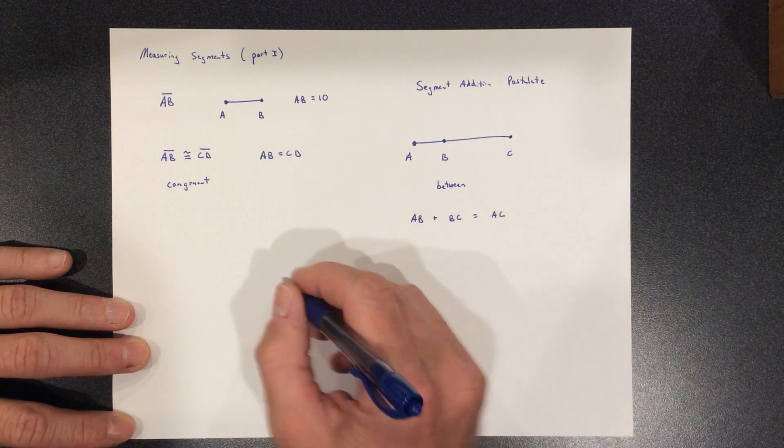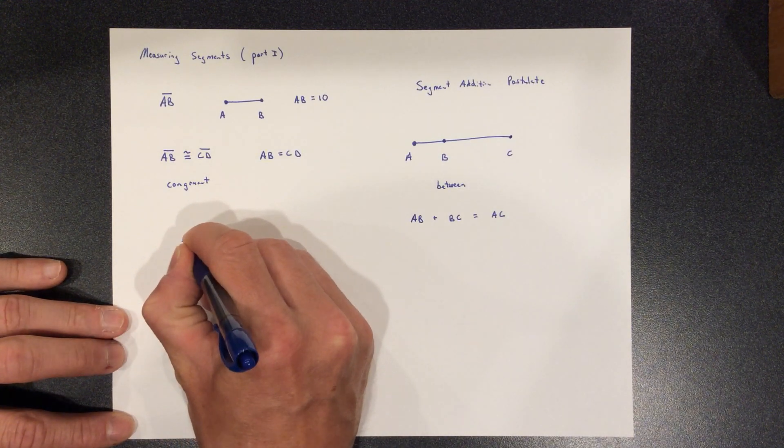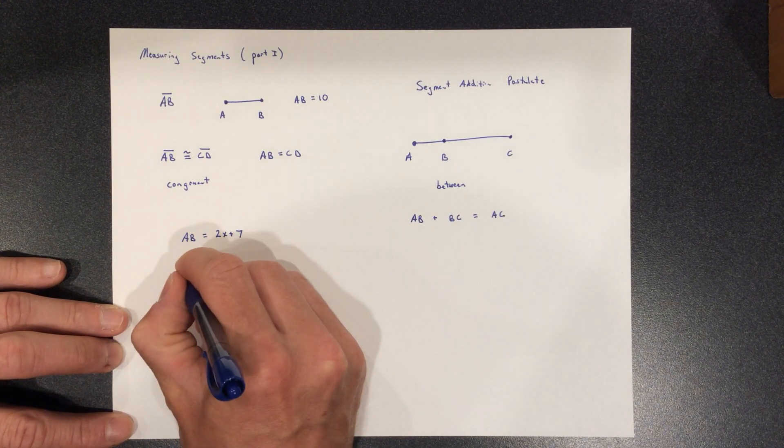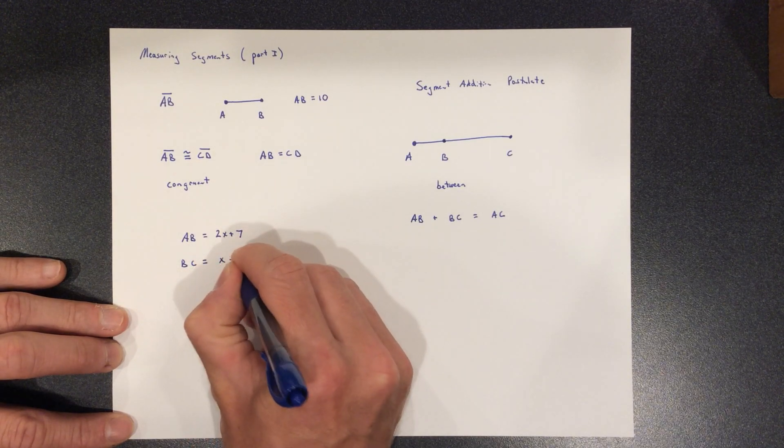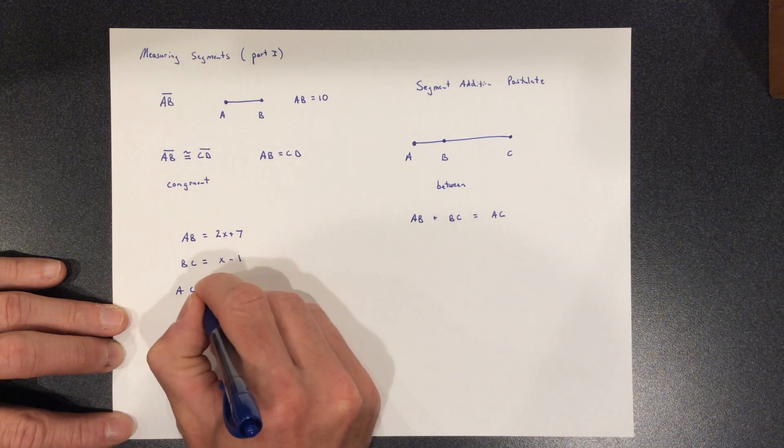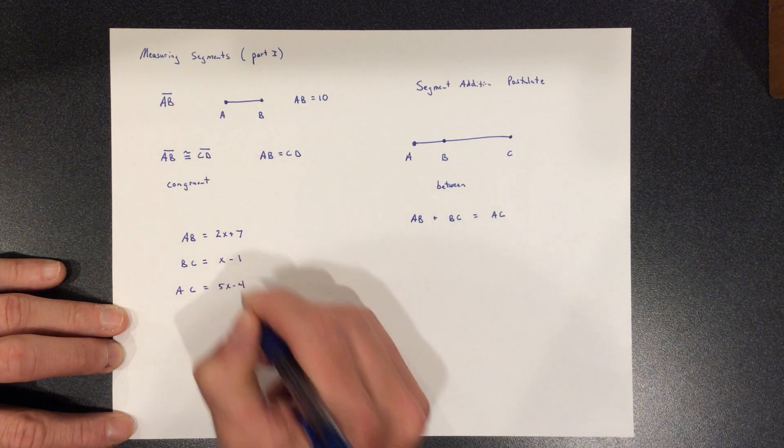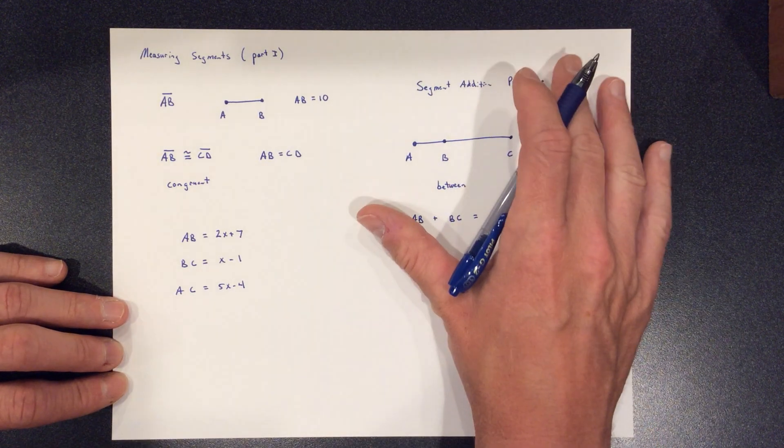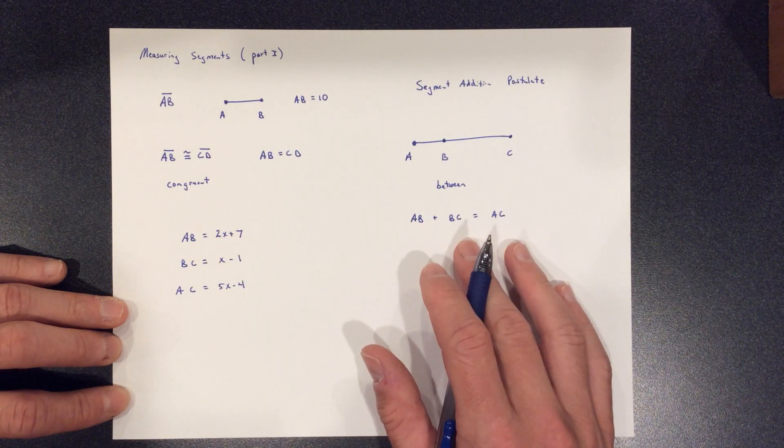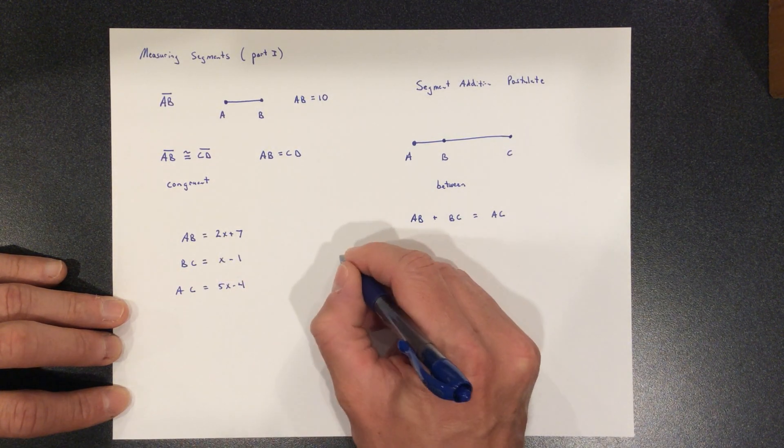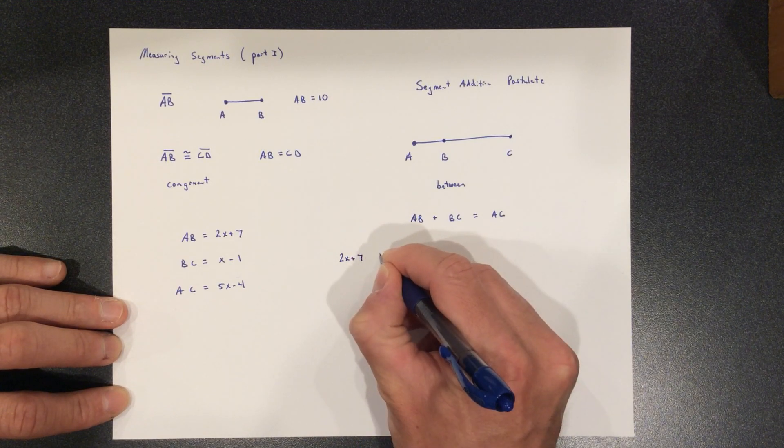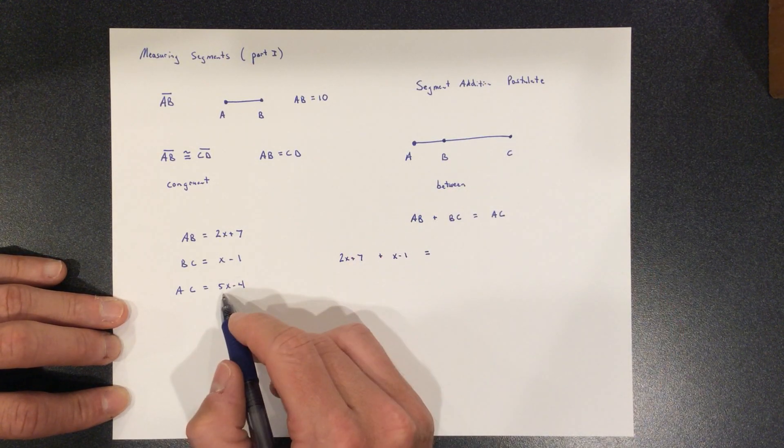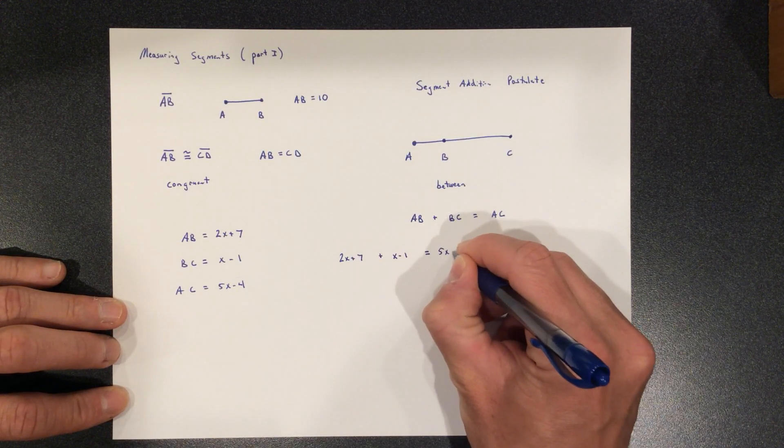And we set up some scenarios where you can use some algebra to solve this. So let's pretend I told you that AB had a length of 2X plus seven and BC had a length of X minus one and AC had a length of 5X minus four. And what if I said, I want you to find the length of BC. And again, the segment addition postulate kind of lays it out for you. Just take what you know the first segment is, 2X plus seven, add it to what you know the second segment is, X minus one, and set it equal to what you know that the total has to be. The total length of line segment is 5X minus four.